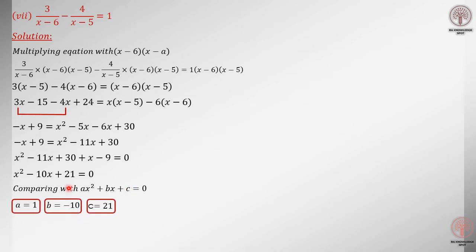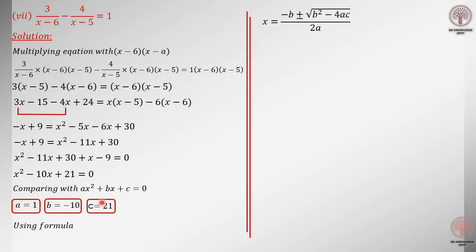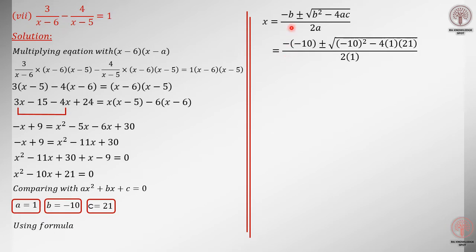Now we apply the quadratic formula. This exercise is related to the quadratic formula. First, we compare with ax squared plus bx plus c equals 0. After comparing: a equals 1, b equals minus 10, and c equals 21.